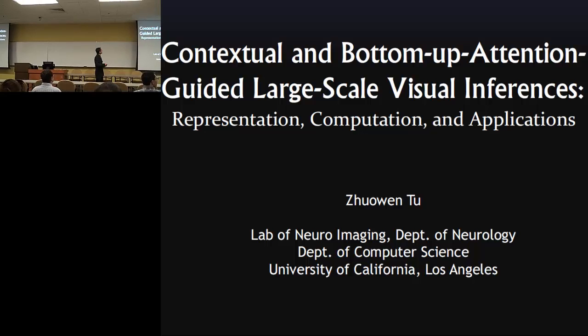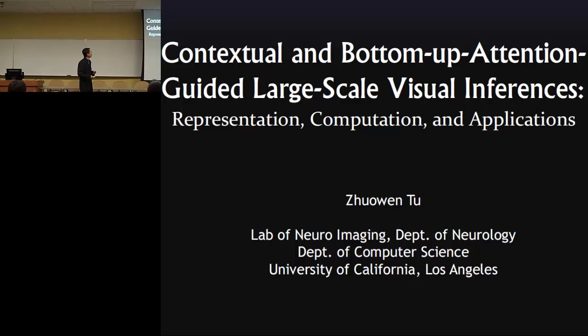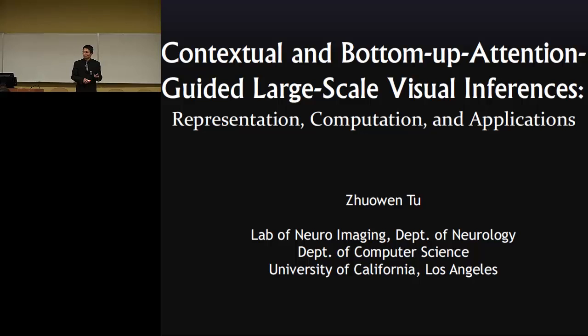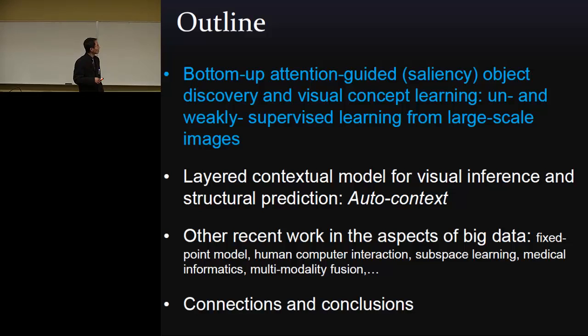The topic will be contextual and bottom-up attention guided, with focus on representation and learning for large-scale visual inferences. The talk will be mostly three parts: one is the bottom-up attention guided, or neuroscience-driven computer vision or learning models for weakly and unsupervised learning. A particular approach I'm pushing is called cascade models or auto-context models, with a series of papers including one appearing at ICML next month.